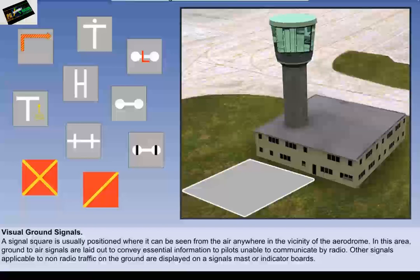As well as light signals, other ground to air signals are used to convey information to the pilot. A signal square is usually located outside the air traffic control tower or at another location on the movement area where it can be seen from the air anywhere in the vicinity of the aerodrome. In this area, ground to air signals are laid out to convey essential information to pilots unable to communicate by radio. Other signals applicable to non-radio traffic on the ground are displayed on a signals mast or by means of indicator boards.